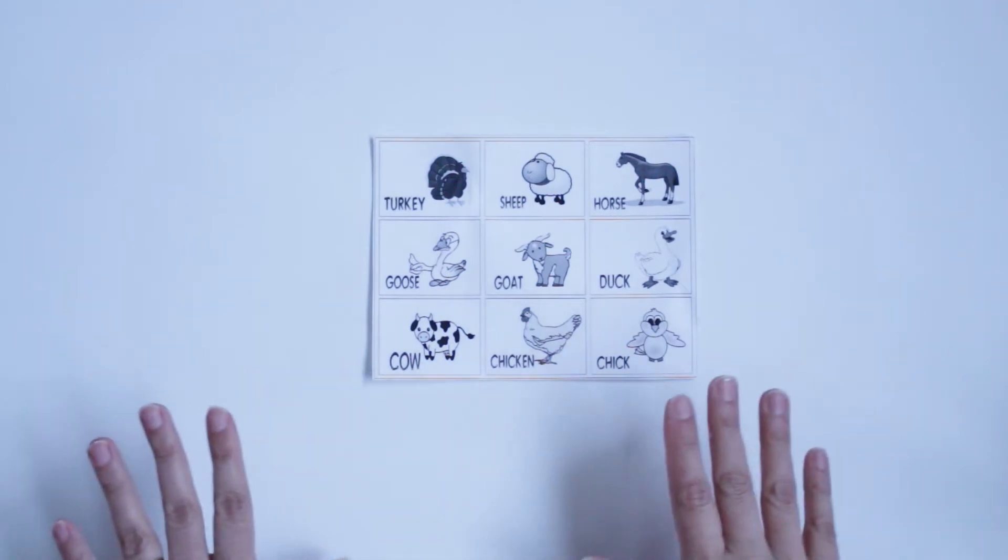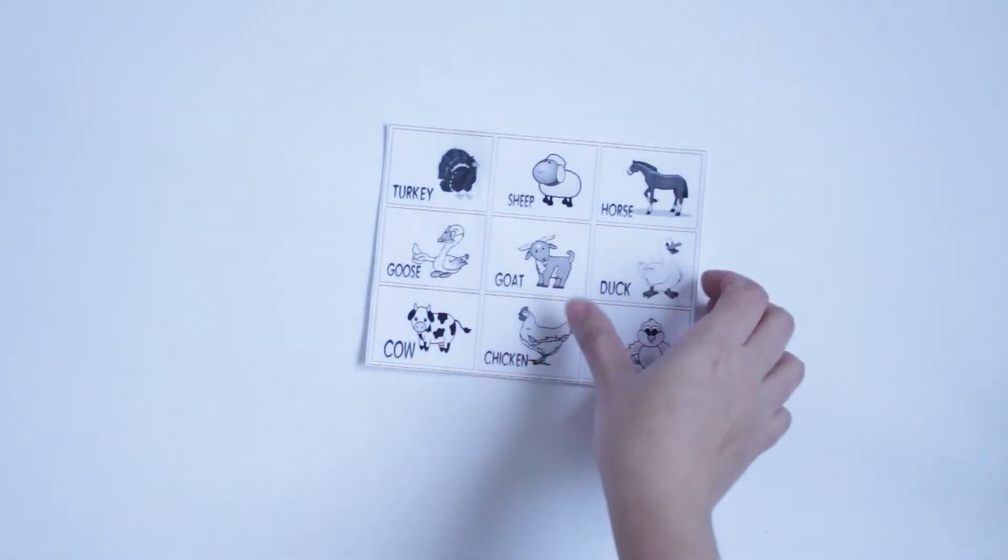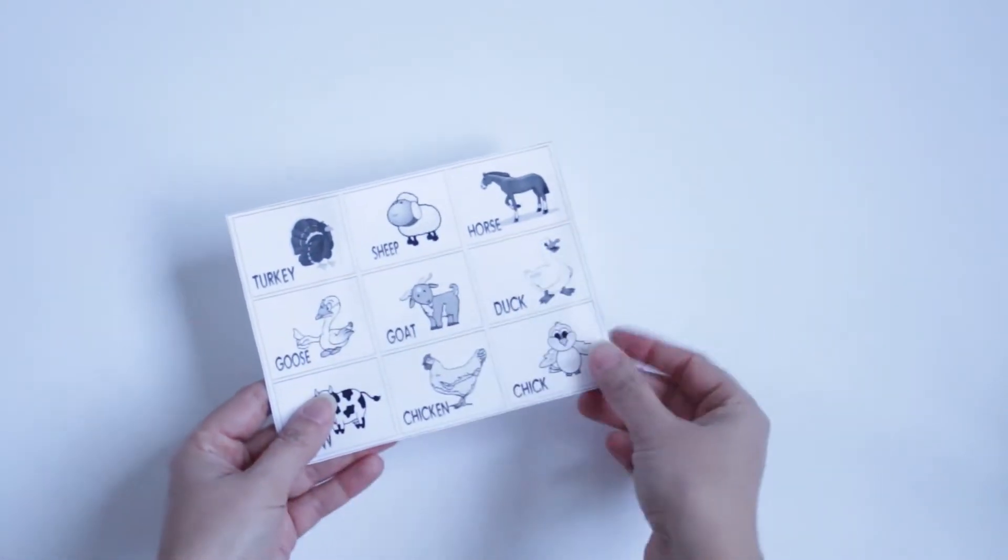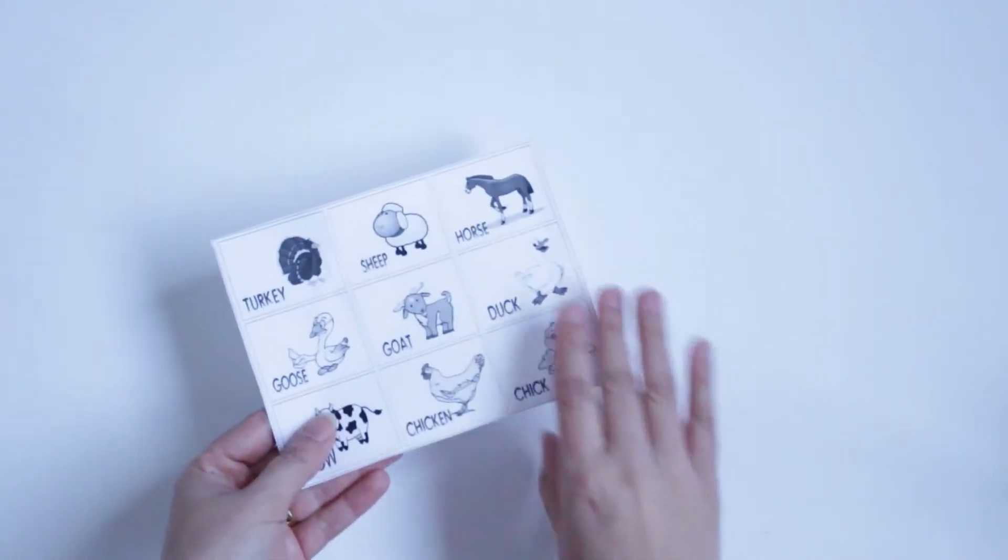To prepare this memory game, you need this sheet with the farm animals. You also need to print it twice so you have each animal in double.